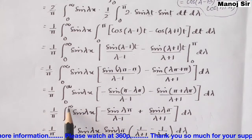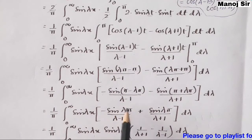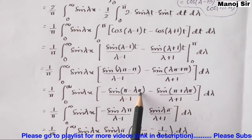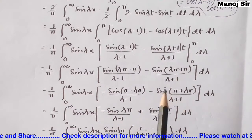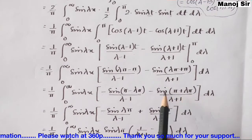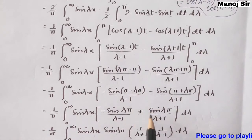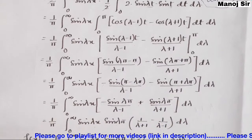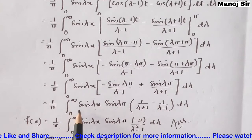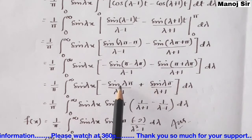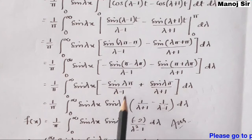Using the identity sin(π − λπ) = sin(λπ), the first term becomes sin(λπ) / (λ − 1). For the second term, sin(π + λπ) = −sin(λπ), so the double negative gives +sin(λπ) / (λ + 1). We now have (1/π) ∫₀^∞ sin(λx) · sin(λπ) [1/(λ + 1) − 1/(λ − 1)] dλ.